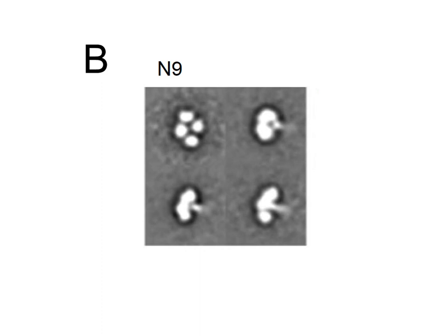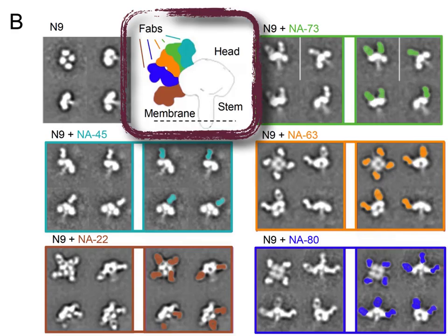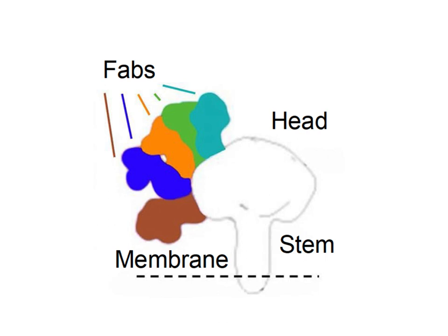In panel B, we show two-dimensional class averages from electron microscopy of N9NA alone or in complex with FABs. We discovered five different binding poses for these major antibodies. That cartoon is derived from these data — the two-dimensional class averages where we can estimate different angles from the complexes. That's how we discovered the epitopes and the binding poses, and it's interesting because they're very diverse.